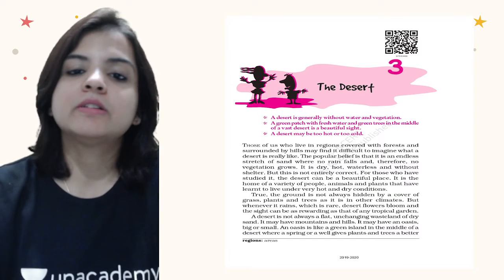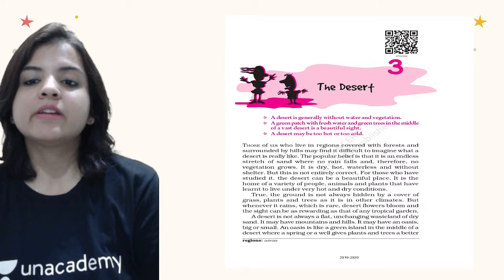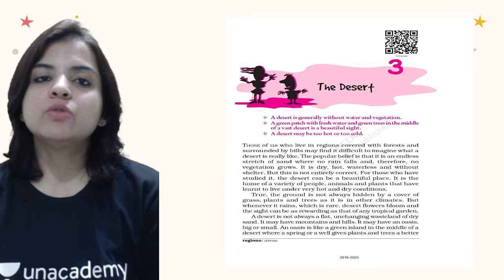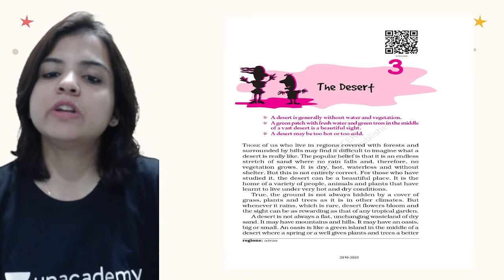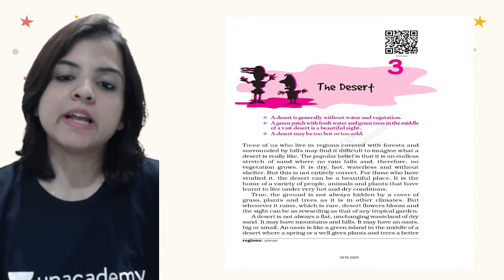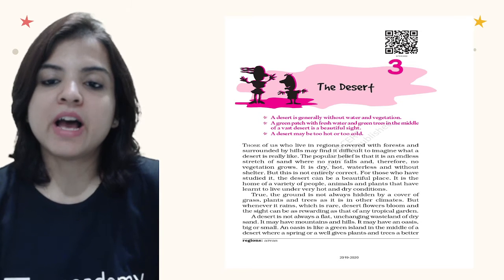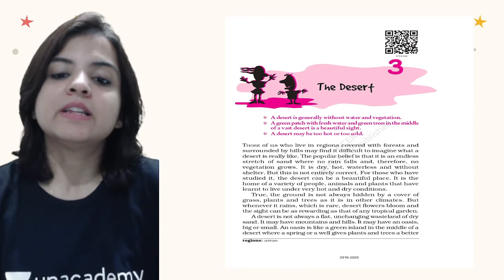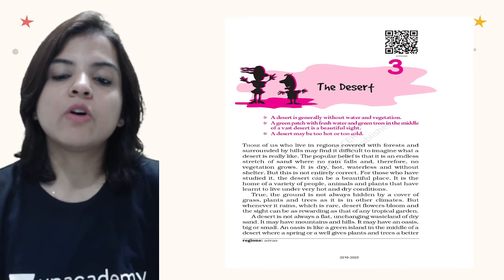A desert is generally without water and vegetation. A green patch with fresh water and green trees in the middle of a vast desert is a beautiful sight and is called an oasis. A desert may be too hot or too cold. The popular belief is that it is an endless stretch of land where no rain falls, therefore no vegetation grows — it is dry, hot, waterless and without shelter. But this is not entirely correct. For those who have studied it, the desert can be a beautiful place — it is home to a variety of people, animals and plants that have learned to live under very hot and dry conditions.